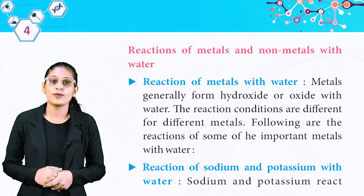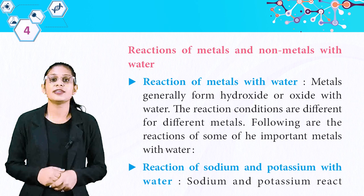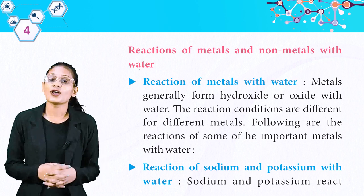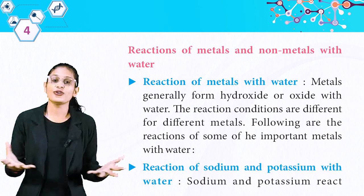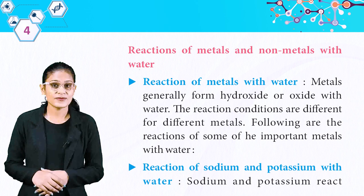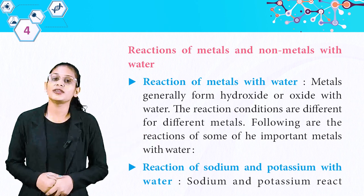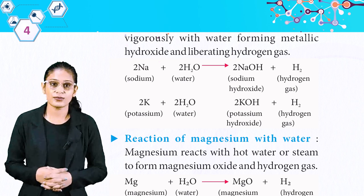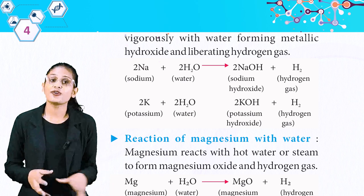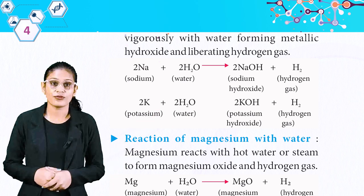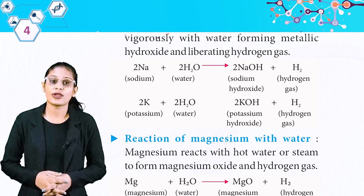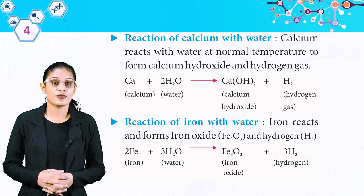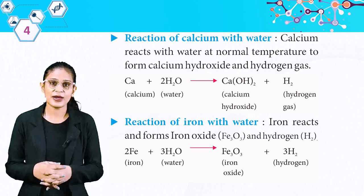Reactions of metals and non-metals with water. Metals generally form hydroxide or oxide with water; the reaction conditions are different for different metals. Reaction of sodium and potassium with water: sodium and potassium react vigorously with water forming metallic hydroxide and liberating hydrogen gas. Reaction of magnesium with water: magnesium reacts with hot water or steam to form magnesium oxide and hydrogen gas. Reaction of calcium with water: calcium reacts with water at normal temperature to form calcium hydroxide and hydrogen gas.